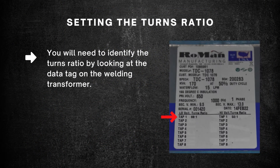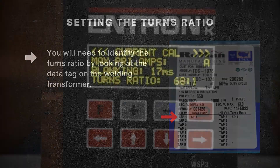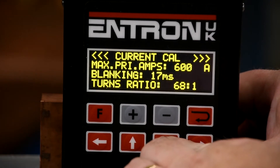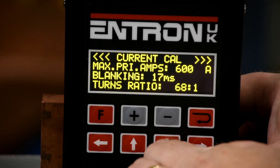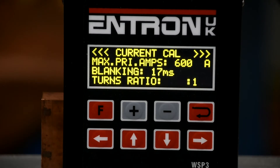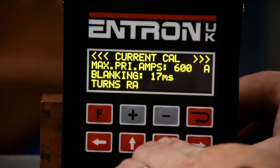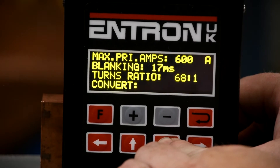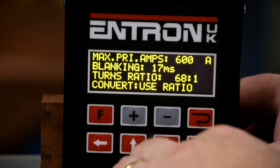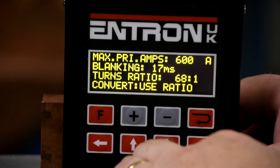Next we will set the turns ratio. You will need to identify the turns ratio by looking at the data tag on the actual welding transformer. While in the current calibration menu, scroll down to find the turns ratio setting. In our case, the turns ratio is 68 to 1. Please note some transformers offer two tap settings — ensure you enter the turns ratio relative to the tap setting. Next, select the turns ratio option for the convert function. This setting is also located in the current calibration menu.